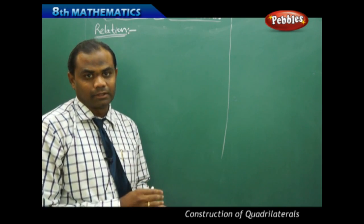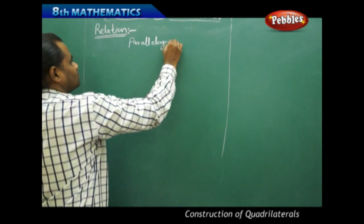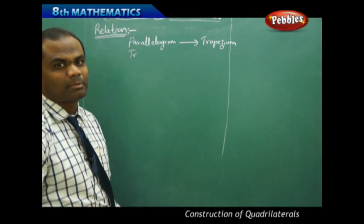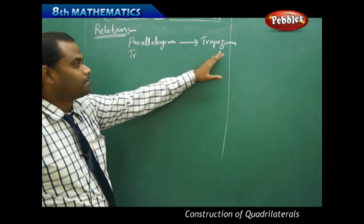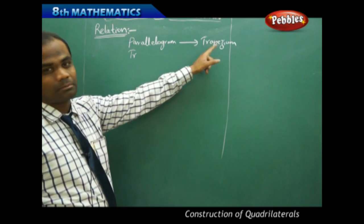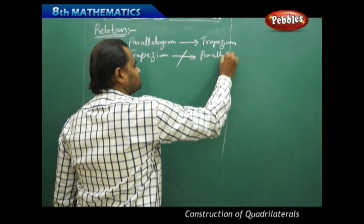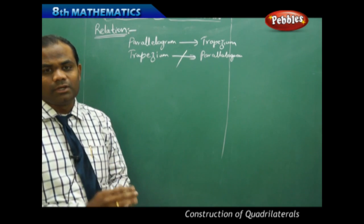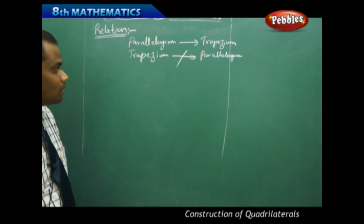Every parallelogram is a trapezium, but every trapezium is not a parallelogram. In a parallelogram, two pairs of sides are parallel; in a trapezium, only one pair is parallel. So a parallelogram satisfies the trapezium condition. Also, in a parallelogram, when opposite sides are parallel, they are also equal, because the parallel condition proves equality.